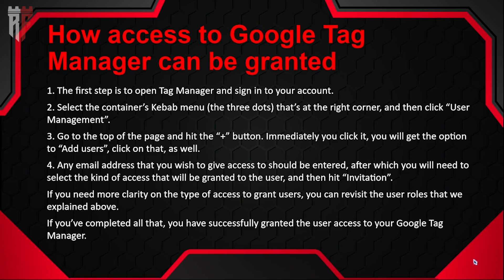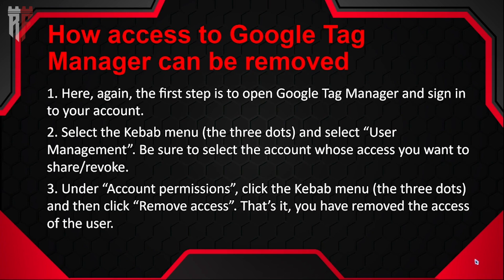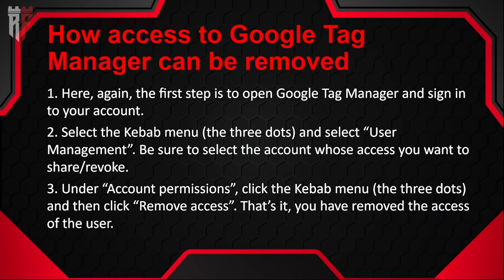Let's go over the steps. First, open up Google Tag Manager. Second, use the sandwich menu or kebab menu — the three dots. Go to the top of the page and hit the plus sign. You'll be taken immediately to add users. Use the email address you want to add, then select how they can access — what level you want them to be at and what permissions they have.